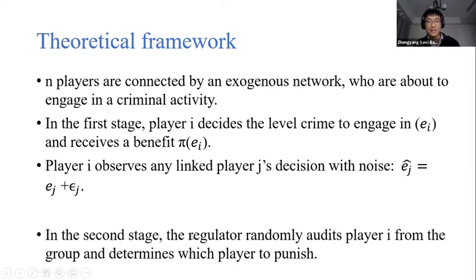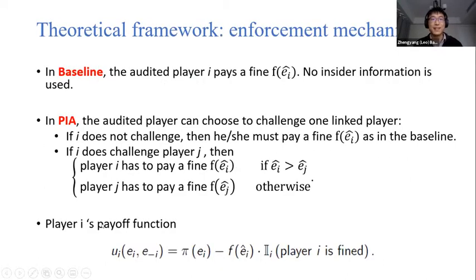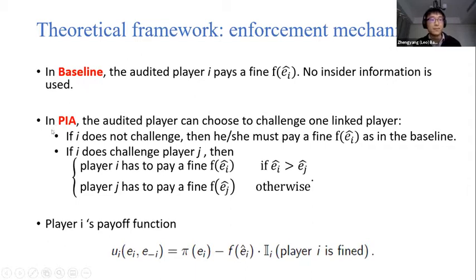In the second stage, the regulator will randomly audit a player from the group and then determine which player should be punished. This depends on the enforcement mechanism. In the baseline, the audited player pays a fine — no insider information is used. In our Peer Informed Audit mechanism, this audited player can choose to challenge one linked player in order to get away with the fine. The player can also choose not to challenge, in which case he or she must pay the fine as in the baseline.